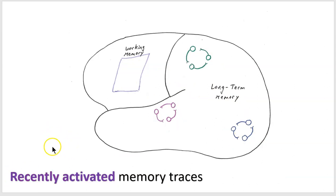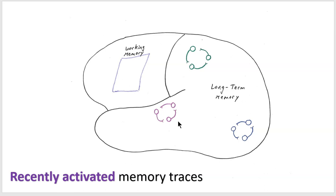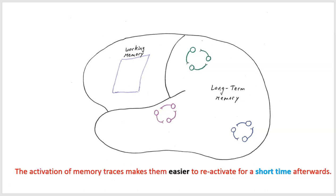Now let's consider the third kind: a recently activated memory trace. With weak cortical memory traces from a first study session, you may have experienced that when learning new information — say, reading a passage or watching a video lesson — for a short time afterwards you have fast easy access to the information you were just processing. So even with weak cortical memory traces, something gives us access to that information shortly after studying. Apparently the activation of memory traces makes them easier to reactivate for a short time afterwards.